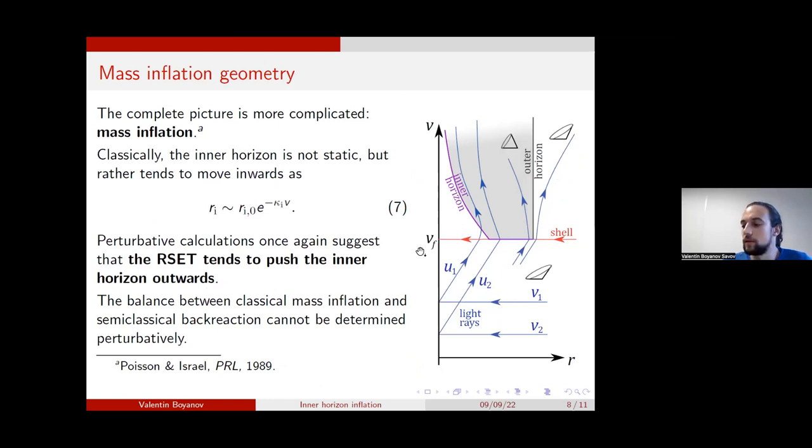Now, as I said before, the inner horizon classically actually doesn't just stay put. It actually tends toward the origin due to the mass inflation instability. For the purposes of understanding how the trapped region evolves, the only thing you need to know is that initially it makes the trapped region move toward the origin as this decaying exponential here. If we once again calculate the renormalized stress energy tensor on this type of geometry, simplifying the initial conditions in the same way,